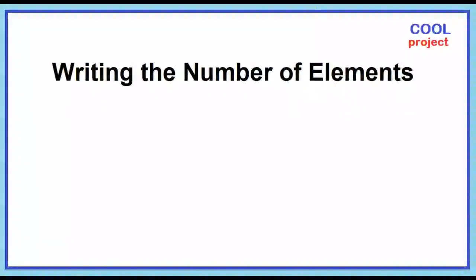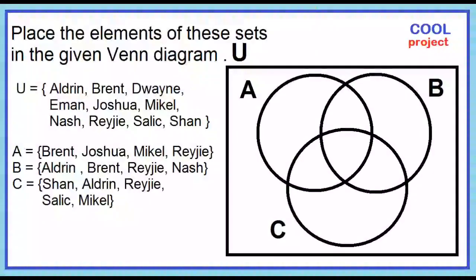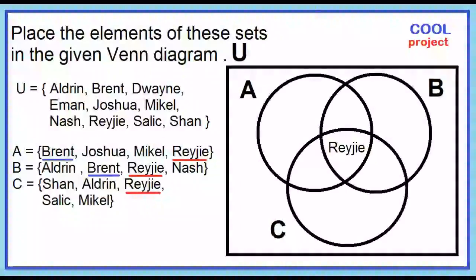Writing the number of elements. Place the elements of these sets in the given Venn diagram. What are the elements common to A, B, and C? Since we already have Reggie, place Brent in the area where A and B overlap.